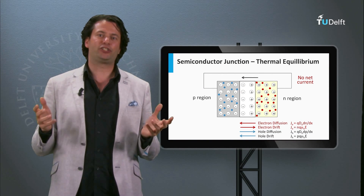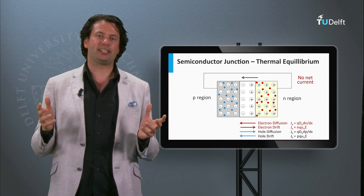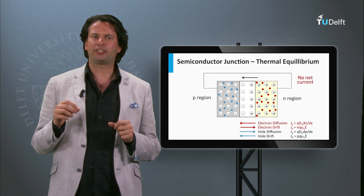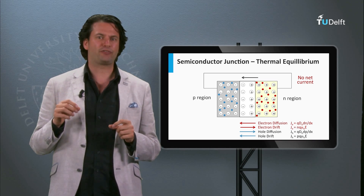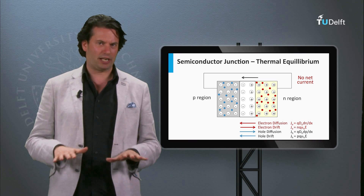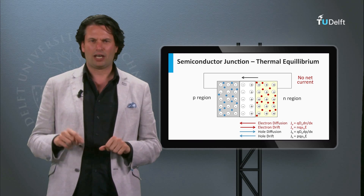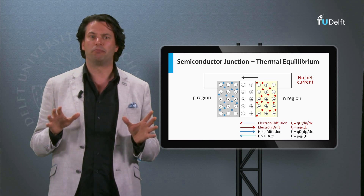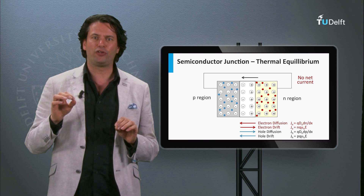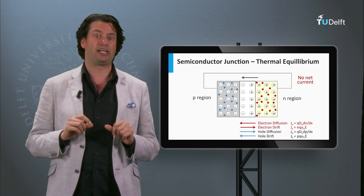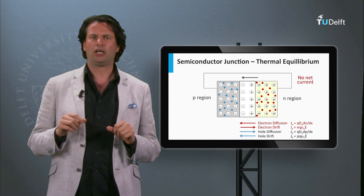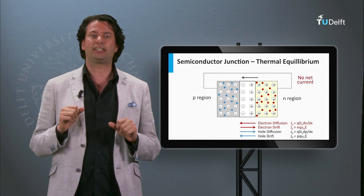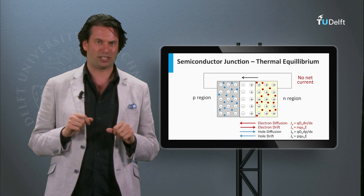We have discussed a p-n junction in the dark in thermal equilibrium. In this situation the diffusion and drift over the depletion zone are in balance. Now we are going to disturb the equilibrium by applying a bias voltage or shining light on the p-n junction. We will see that an illuminated p-n junction acts like a solar cell.